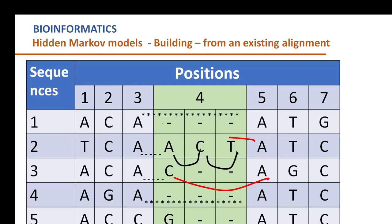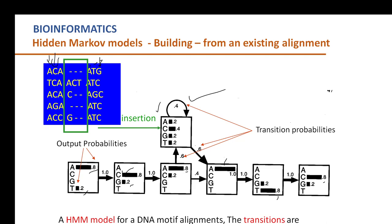The major challenge is in the calculation of the transition probability for the insertion state. The emission and transition probability from state 1 to state 1 is relatively easy to calculate because there are no gaps and the states are clearly moving from one to another. The first three columns correspond to match states 1, 2, and 3. The fourth column — the gap column — represents the insertion state. We will now work out how to get the values 0.6, 0.4, 0.8, and 0.4, which are four transition probabilities generated from this insertion state.